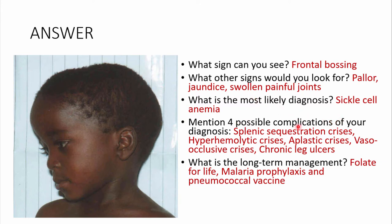For four possible complications: splenic sequestration (which could also happen in the liver), a hyperhemolytic crisis, aplastic crisis — which is infection with Parvovirus B19 (now reclassified as Erythrovirus B19), where the erythroid progenitor cell gets infected — and vaso-occlusive crisis. You could also have chronic leg ulcers.